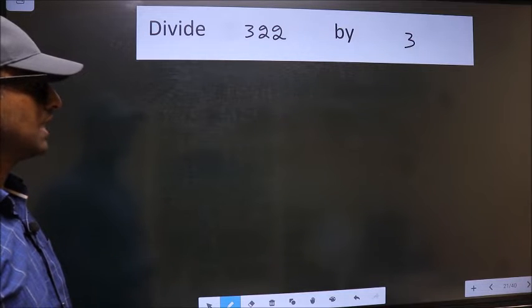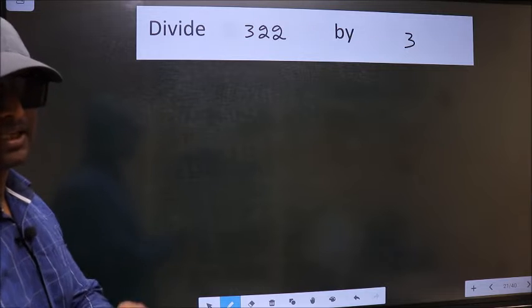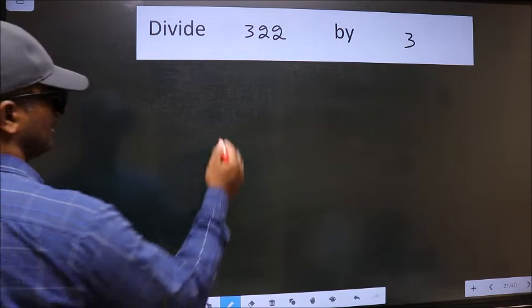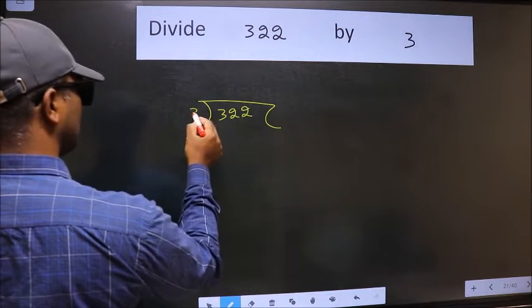Divide 322 by 3. To do this division, we should frame it in this way: 322 here, 3 here.